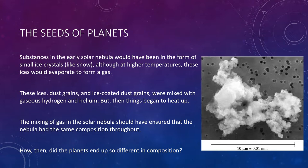But then things began to heat up. The churning and mixing of gas in the solar nebula ensured that it had the same composition throughout—roughly 98% hydrogen and helium, plus 2% heavier elements. So then, how did the terrestrial planets end up so different from the Jovian planets?